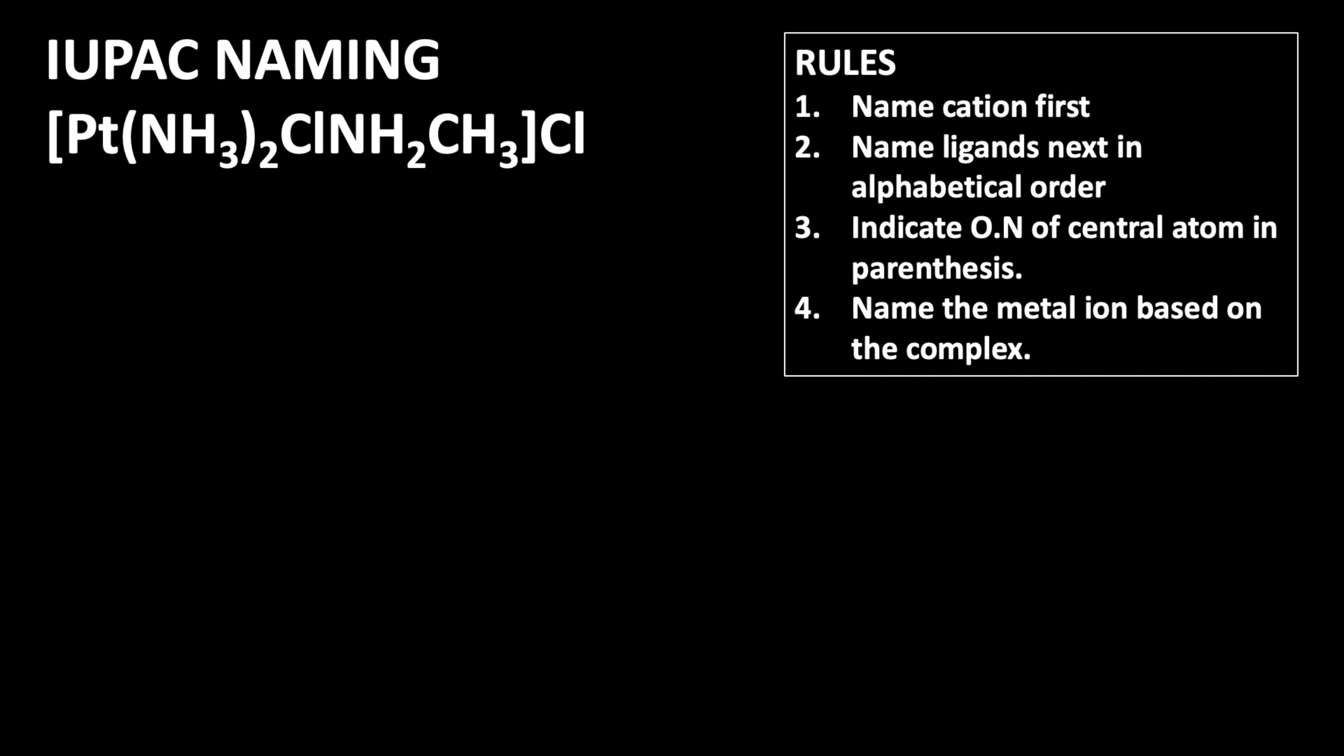So we can write the ligand names first before finding the oxidation state of the central atom. There are two amine groups, so we're going to use diamine. The prefix di represents there are two NH3 groups present. Then Cl group, so that represents chlorido because it is an anionic ligand.